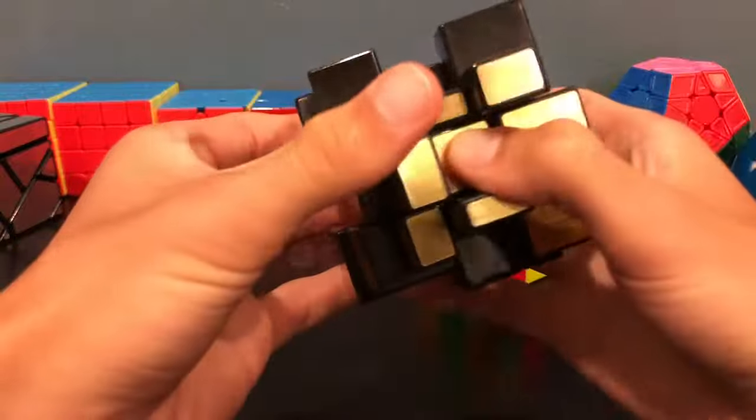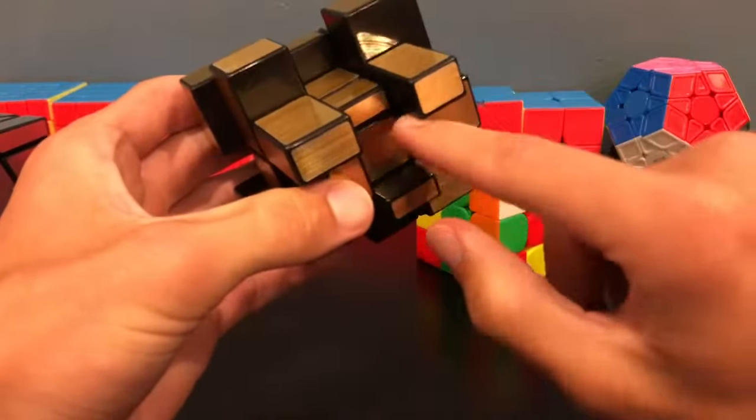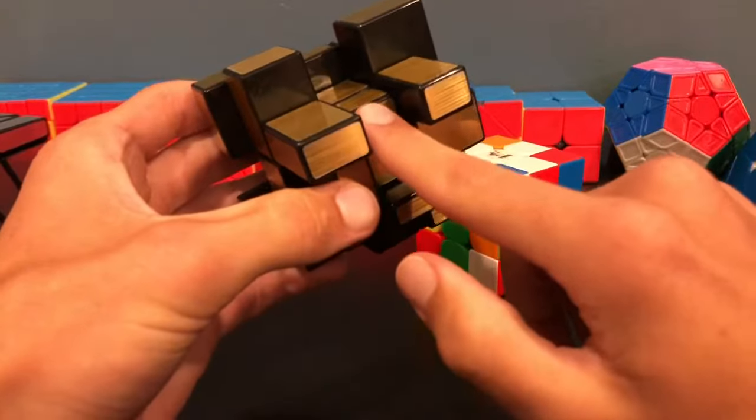Now we will just move this around until we have paired it up. So this would be the equivalent of getting one of our cross edge pieces.